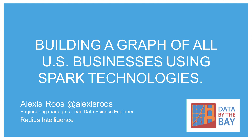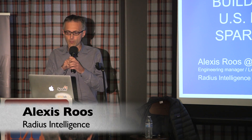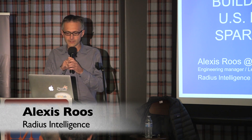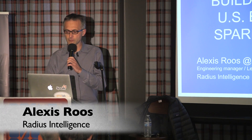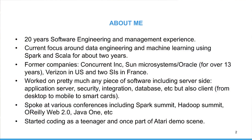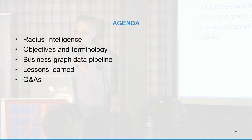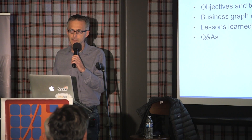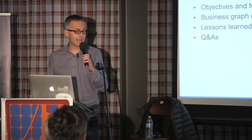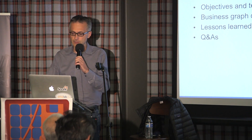In this presentation I will talk about what we do at Reduce Intelligence, and specifically discuss how we build a graph of all US businesses using Spark. In the agenda, I'll quickly introduce Reduce Intelligence, then lay a foundation by introducing objectives and terminology. The bulk of the presentation will focus on our graph data pipeline — some of it technical, but I'll also present it at a high level so you can get a sense of where you can use a graph.